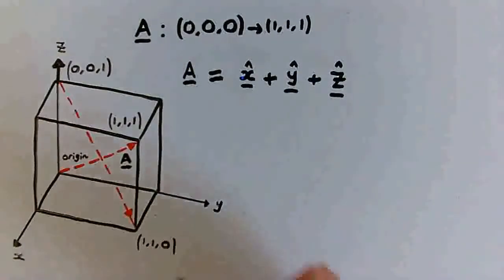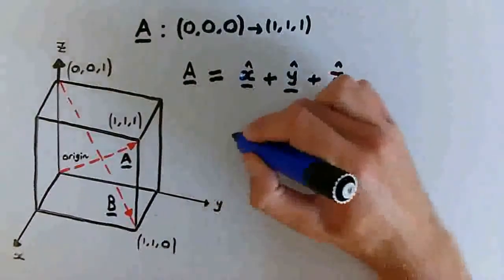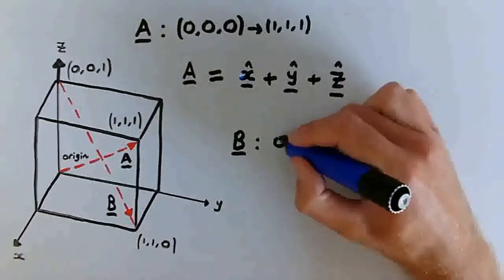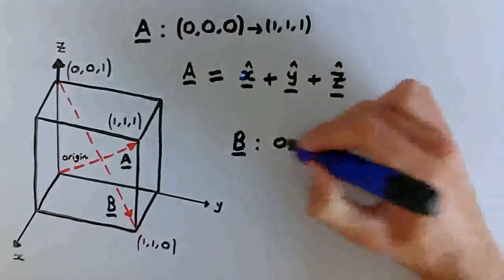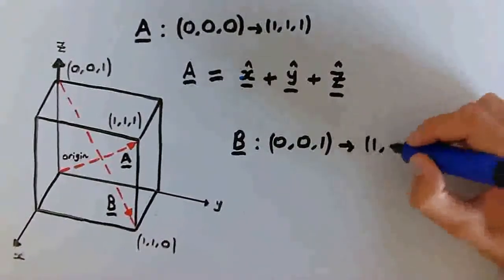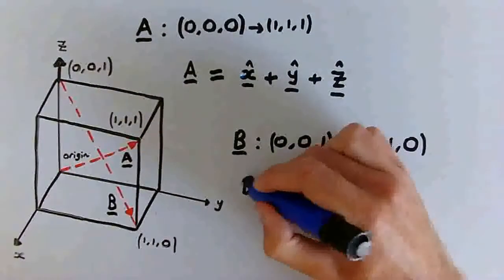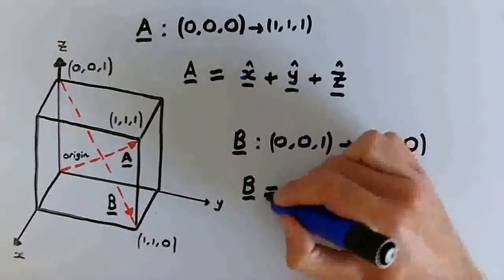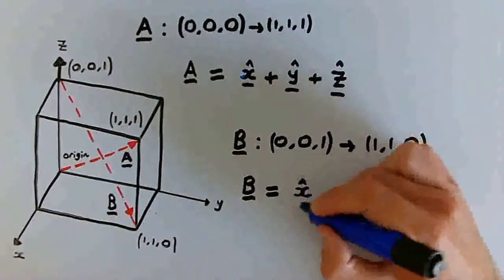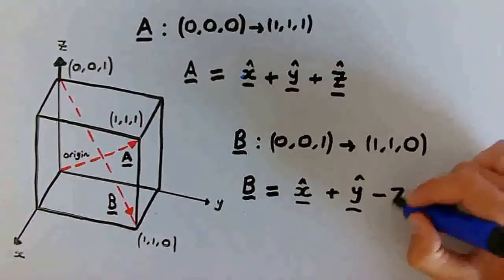Now, let's label the other vector B. Remembering that B points from the point 0, 0, 1 to 1, 1, 0, we can define B using the same unit vectors as x hat plus y hat minus z hat.